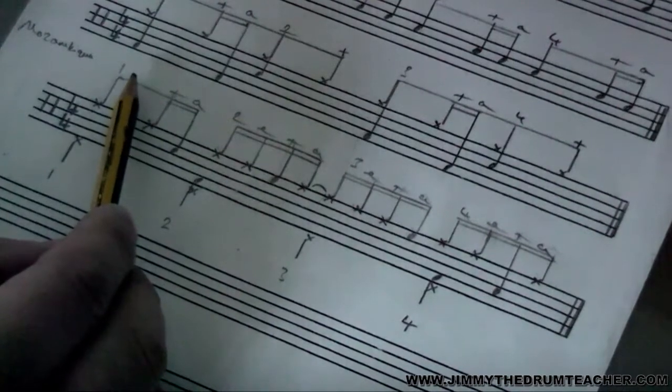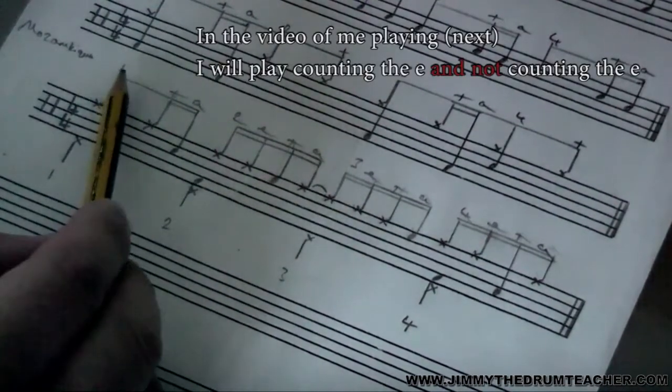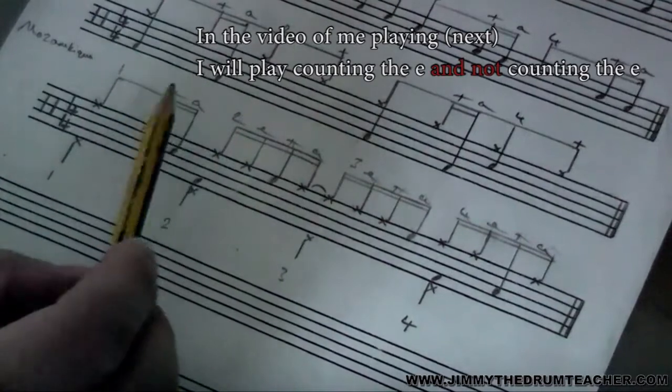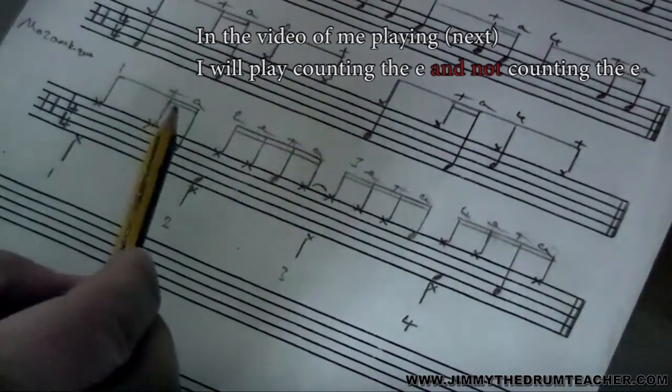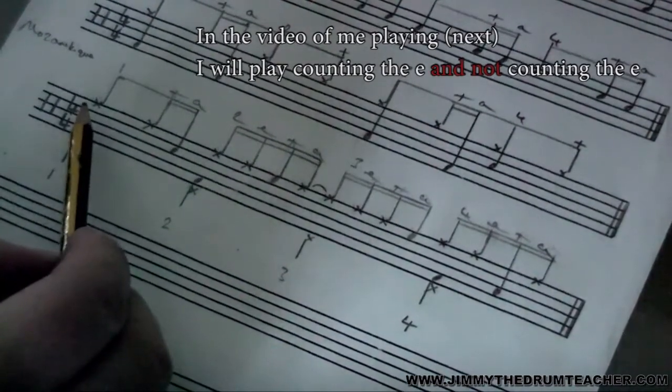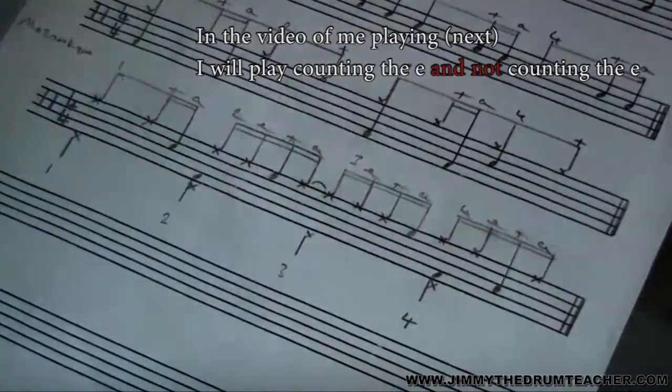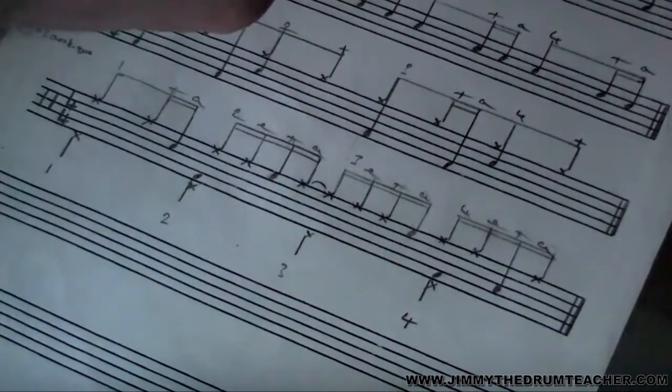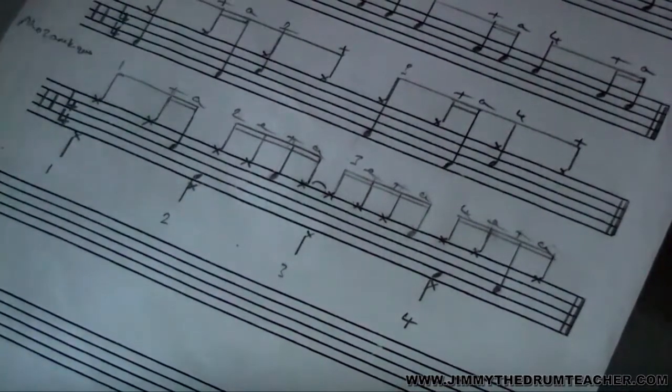But after a while, you want to try and iron, you want to try and take the E's out. So you just want to know this pattern as one and a. One and a. Even though that was the incorrect parts of the kit. One and a. You don't want to have to go after a while one E and a.